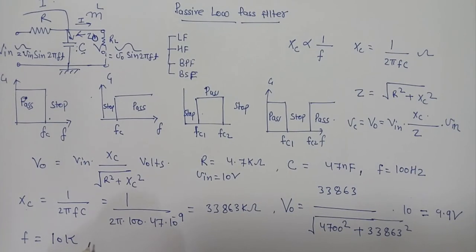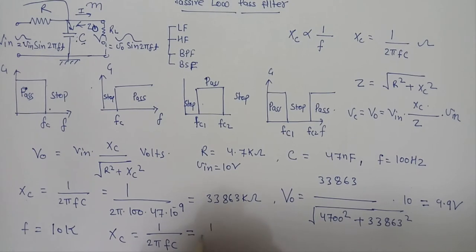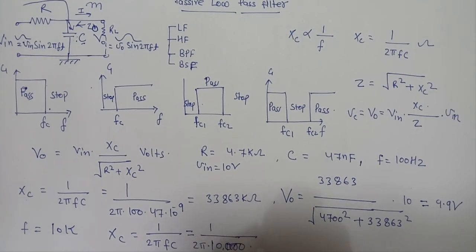Now let's see what will be the final output. The Xc will be changed here. It will be 2πfc = 1/(2π × 10000 × 47 nanofarad).